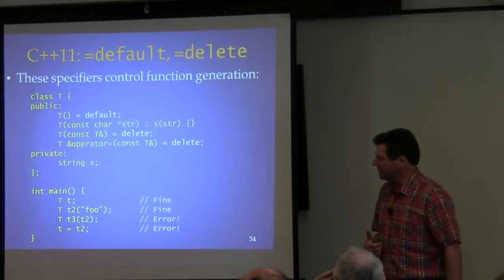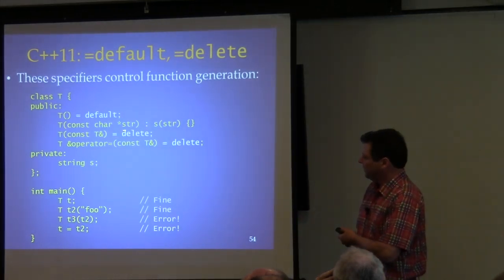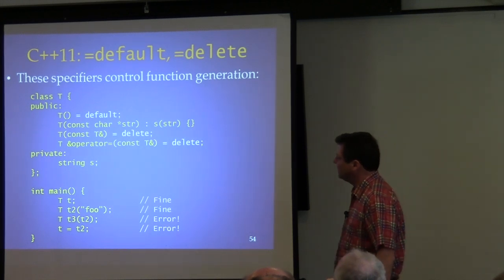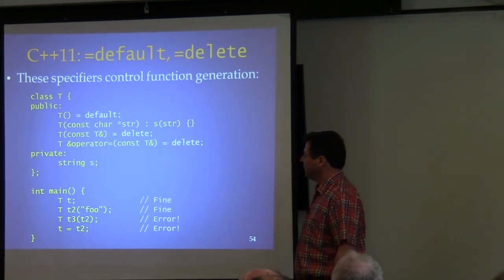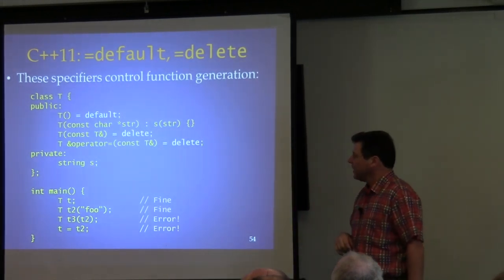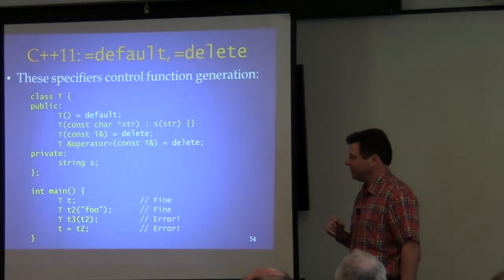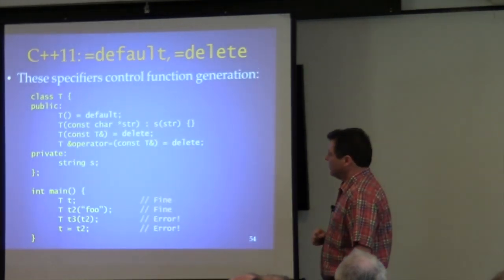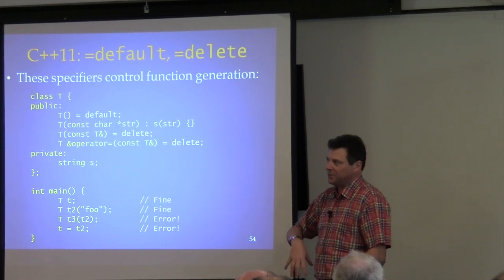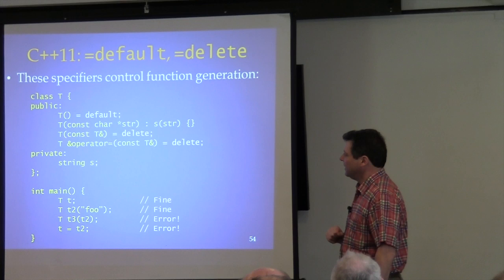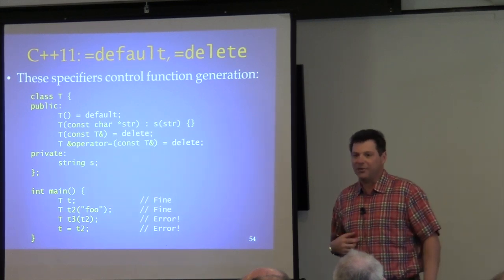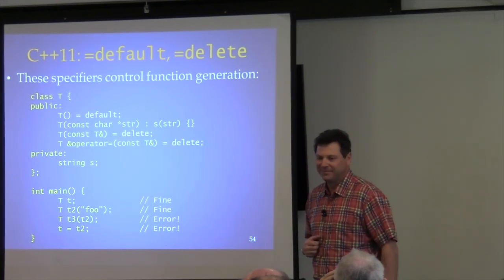Fortunately, C++11 gives you the perfect solution. If you're not going to allow something to be used, you just say equals delete. Notice the clever recycling of an existing keyword. This means the class does not contain those member functions, and the compiler won't generate one for you. The names are still public, so there's a difference between whether something's available versus visible, accessible versus actually implemented.